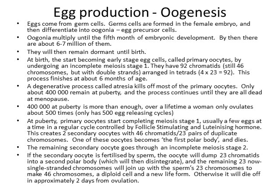At puberty, the primary oocytes start to complete meiosis stage 1, usually a few eggs at a time, triggered by follicle-stimulating hormone and luteinizing hormone. This happens at different stages, so different eggs in the woman's ovary will be at different stages of the oogenesis or folliculogenesis process — they're not all developing at the same time.